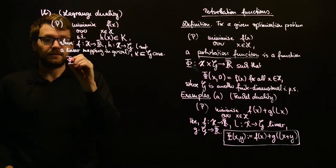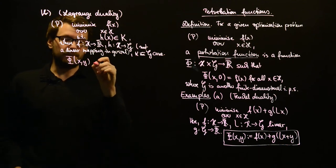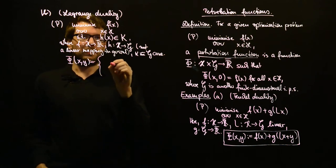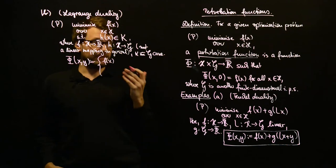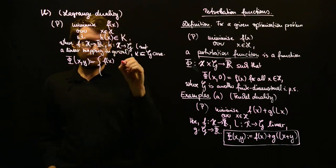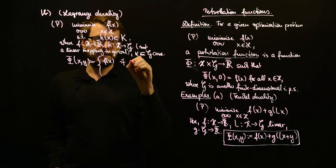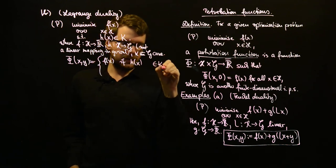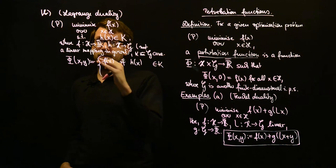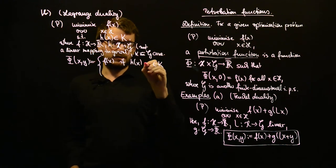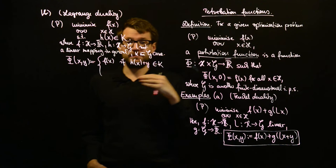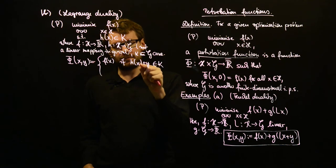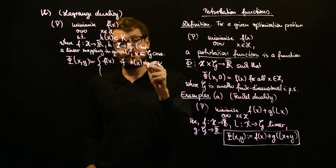And now the perturbation function, which we want to choose, will be as follows. So, then we set this to be f of x, of course, whenever we are feasible. So, f of x if h of x, and here we want to make use of our perturbation and we want to just add h of x plus y should be in K.